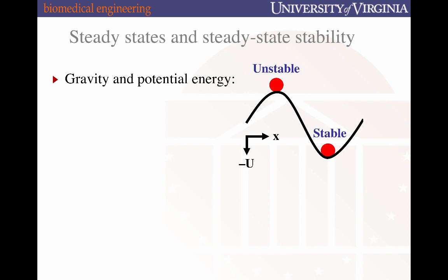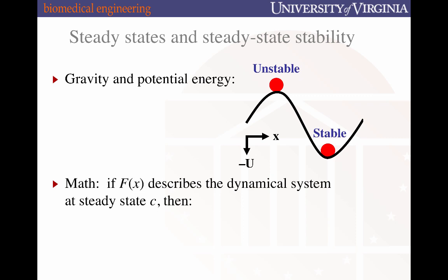We can describe these properties of stable and unstable steady states mathematically if we define an f of X which describes the dynamical system at a steady state C. If we differentiate f as a function of X and then evaluate that derivative at position C, if the rate of change of f of X as a function of X is greater than zero, it's defined to be an unstable steady state, which means the system is being driven away from that steady state. Conversely, if dF/dx is less than zero, that's the equivalent of a restoring force moving that system back to the steady state from where it was originally perturbed.